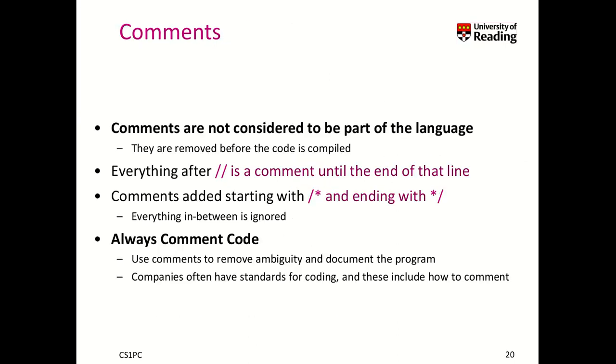So let's get started with comments. Comments are really not considered to be part of the program that you write, and they are basically excluded from the translation to our program to code. So they are removed before the code is compiled. So how do we do that in C? Well, we use two slashes. This is a comment until the end of the line. You can also use slash star and star slash to end this comment. It means everything in between is ignored. Why do we use comments? Because it's really useful to understand what the program does and how it works, and therewith it removes ambiguity what's going on. Also, companies often have standards for coding, and these include how to comment.